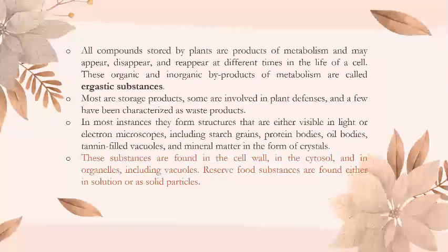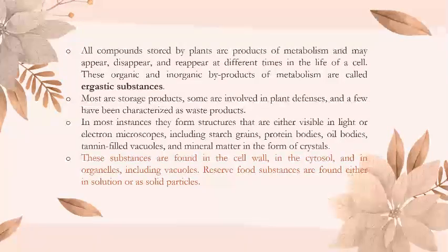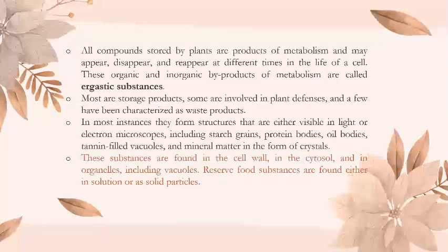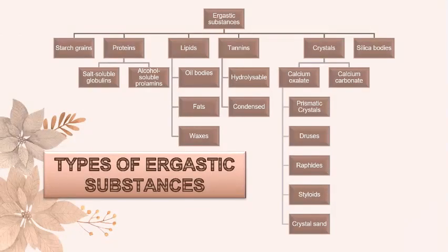All compounds stored by plants are products of metabolism. These organic and inorganic by-products of metabolism are called ergastic substances. These substances are found in the cell wall, in the cytosol, and in organelles including vacuoles. The different types of ergastic substances are: starch grains, proteins, lipids, tannins, crystals, and silica bodies.